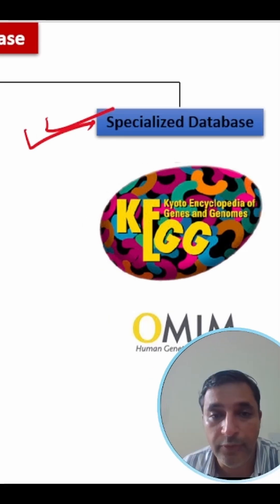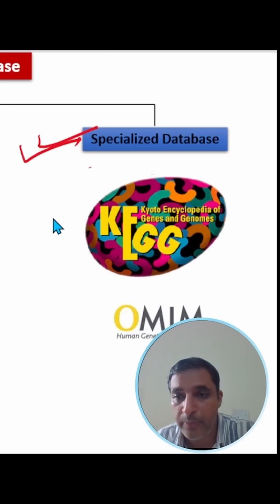Specialized databases contain information of a very specific kind, like a database which contains information about HIV or human immunodeficiency virus. A popular example of specialized database is cat.